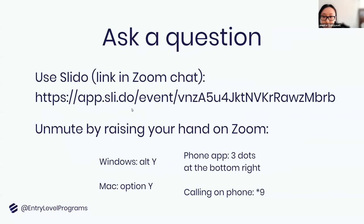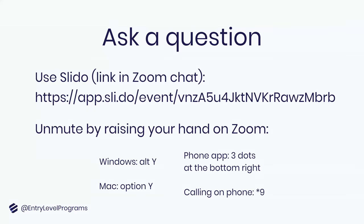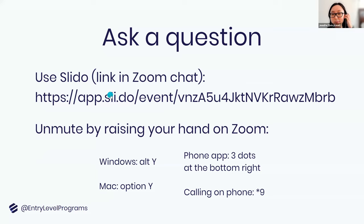To make the Q&A process smoother, we're sending a link to Slido in the chat. All you have to do is click that link, ask your questions for Chido, and upvote the questions you agree with — we'll ask the most upvoted ones. If you'd rather ask your question by unmuting, press Alt+Y on Windows, Option+Y on Mac. If you're on the phone app, there are three dots on the bottom right where you can raise your hand, or press star 9.